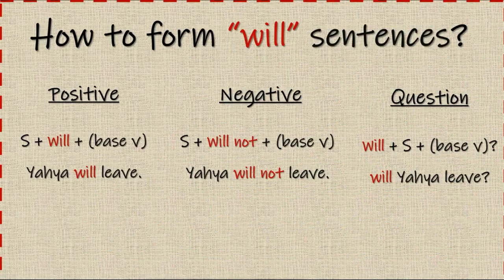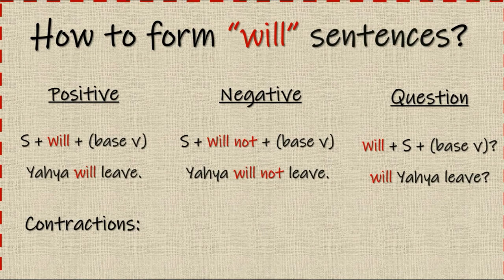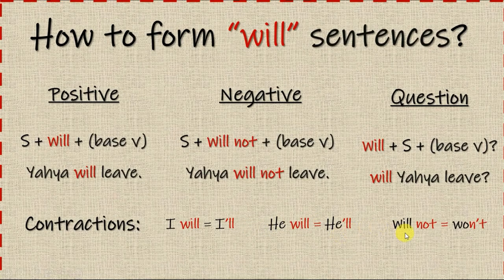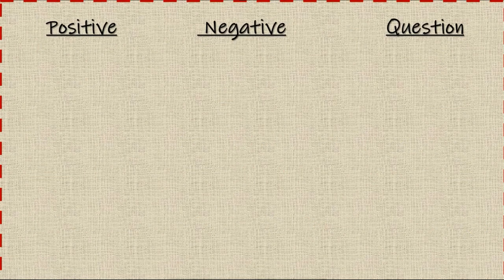Now we have some contractions. A contraction makes something smaller — a shorter form with the same meaning. For example, 'will not' becomes 'won't.' Similarly, 'I will' becomes 'I'll,' and 'he will' becomes 'he'll.' To make it easier, here are examples of each form.